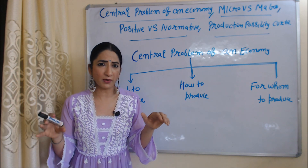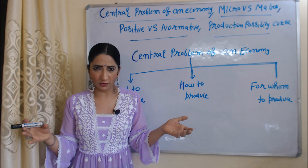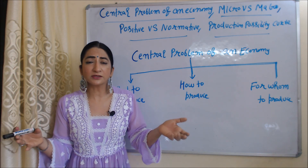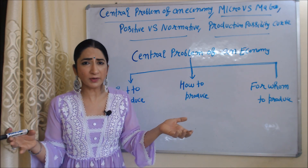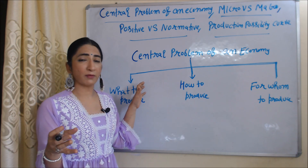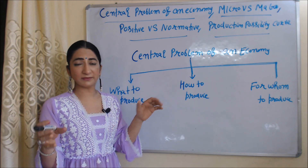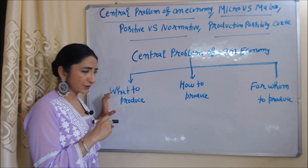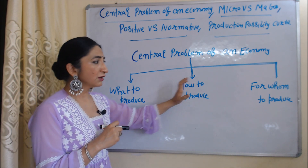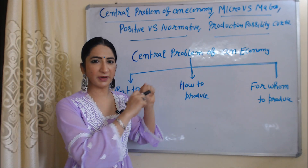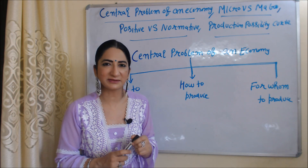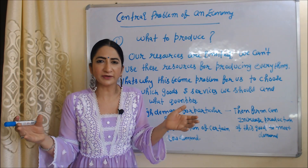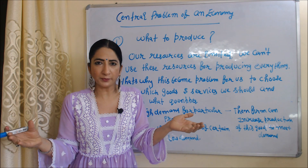First, we are going to talk about the central problem of an economy. The central problem of an economy means a common problem of an economy, and it is basically divided into three parts: what to produce, how to produce, and for whom to produce. We will discuss each one by one.